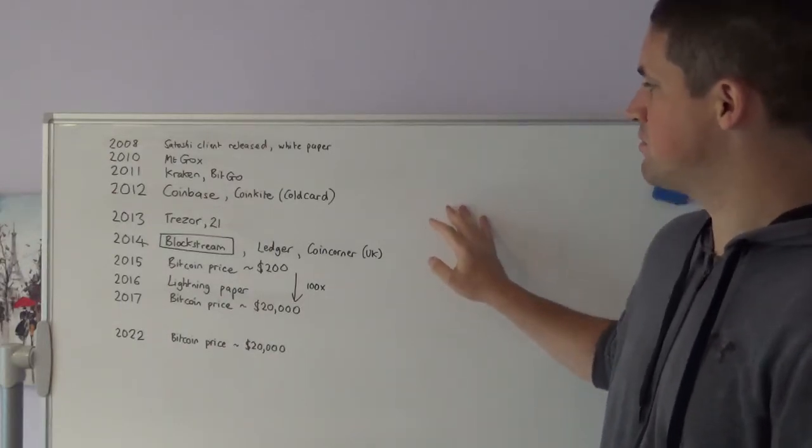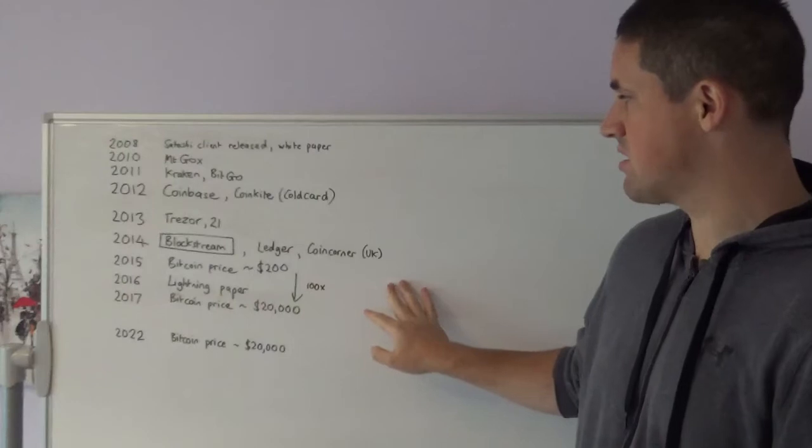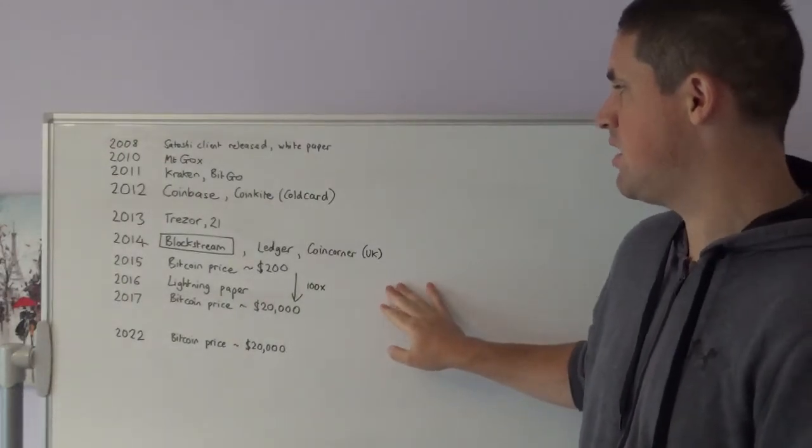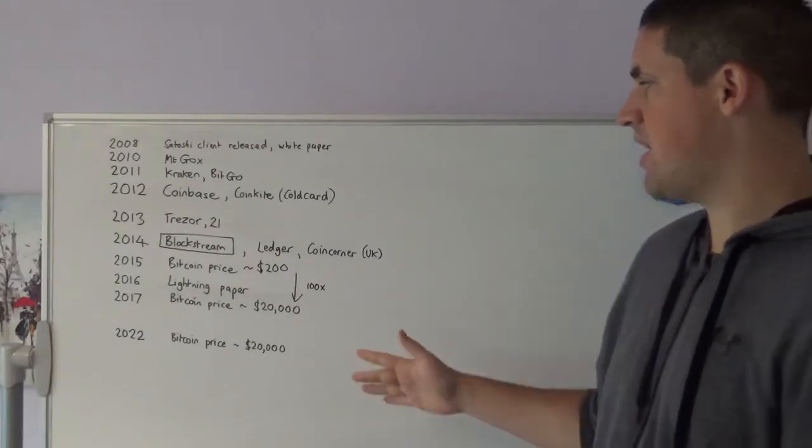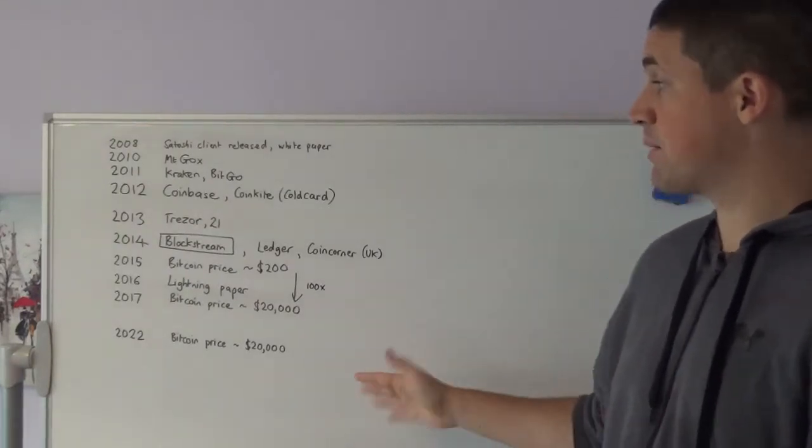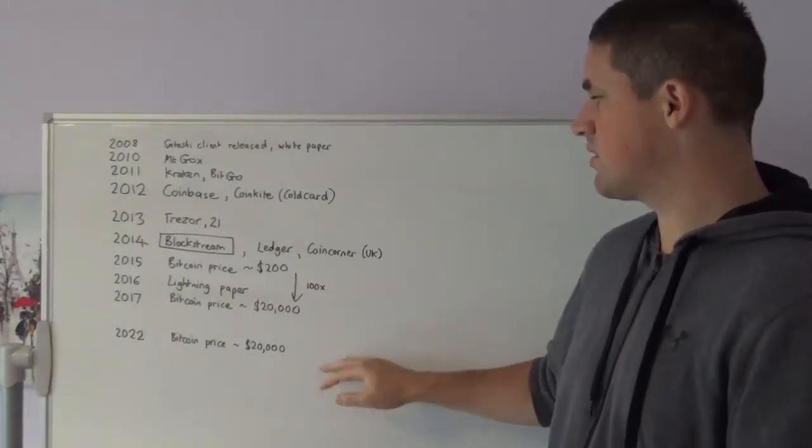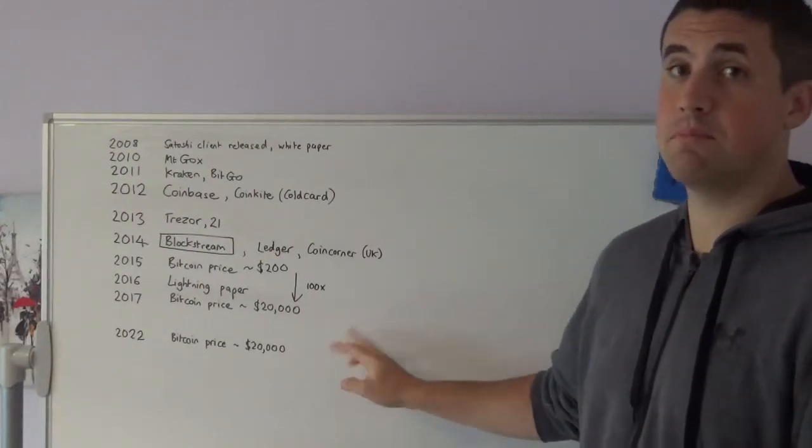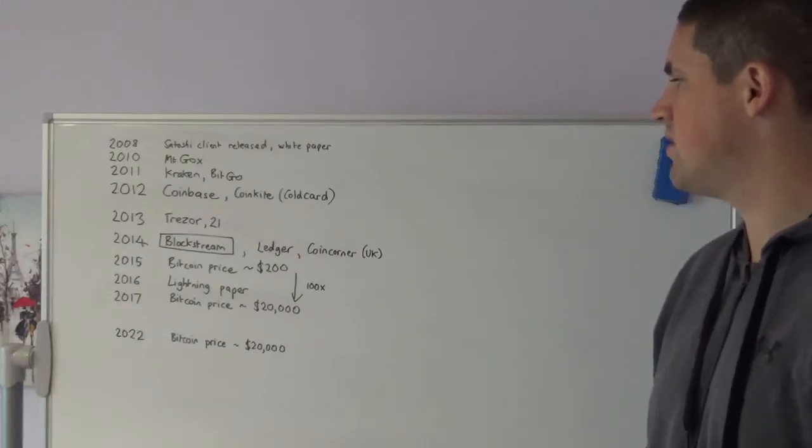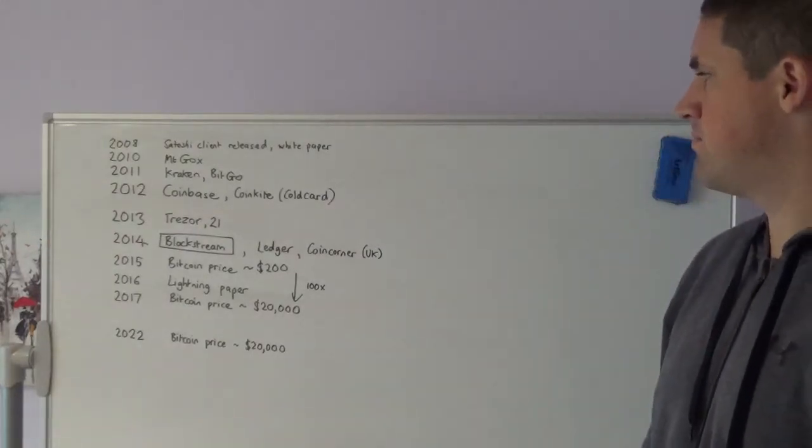All of these companies formed well before the price ever reached close to $200 per Bitcoin. The parallels with today: we've kind of had some Bitcoin price stagnation. Today the price is $20,000. Five years ago, the price peaked at $20,000 per Bitcoin.